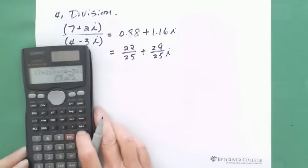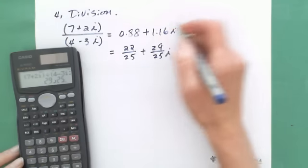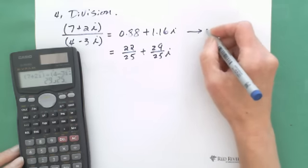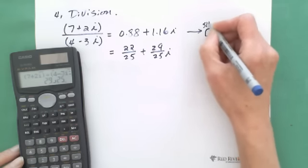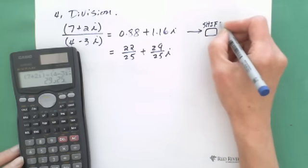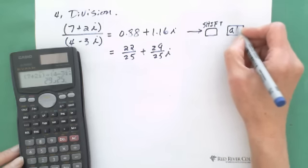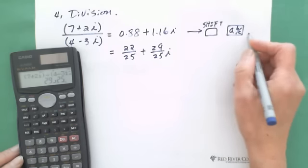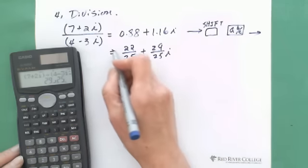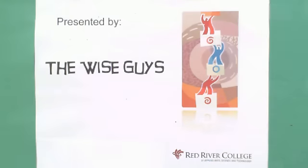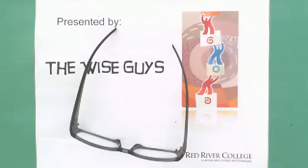From this way, you go to shift and ABC button, and they give you the fraction form. This is presented by Wiseguys. Thank you.